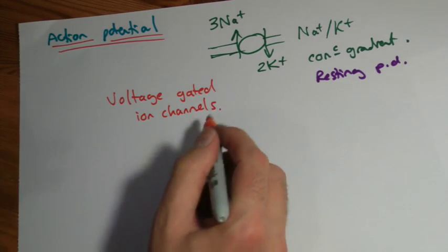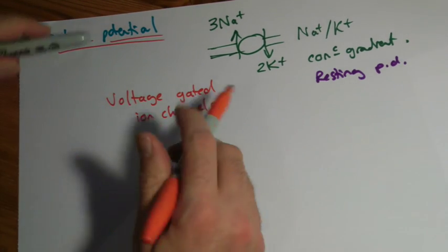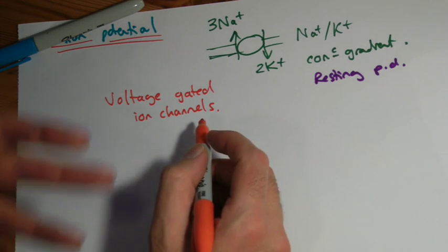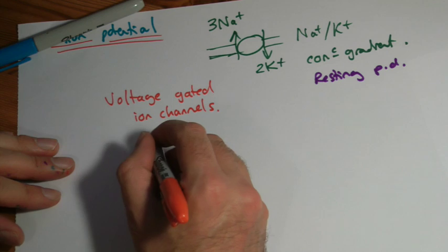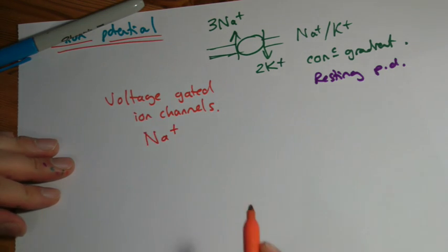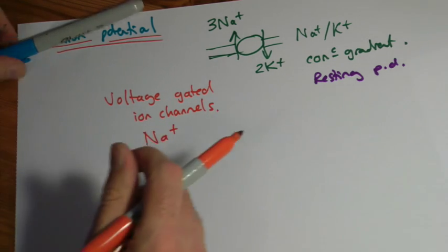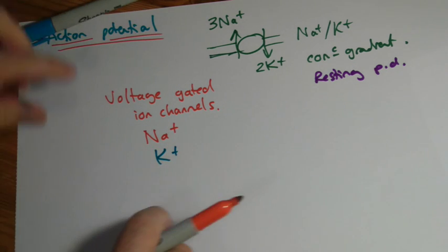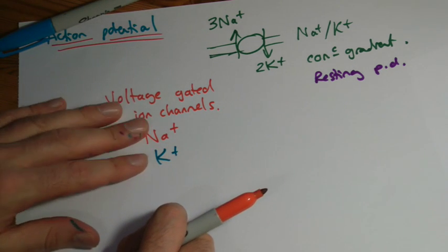What this basically means is they are like a switch or a door that is switched on or off at a different voltage, a different potential difference. So we've got sodium-gated ion channels and we've got potassium voltage-gated ion channels. They both turn on and off at different voltages.